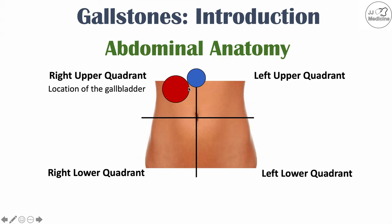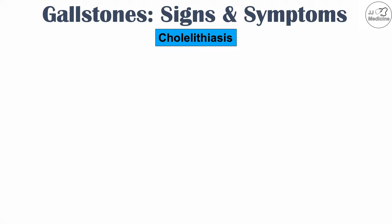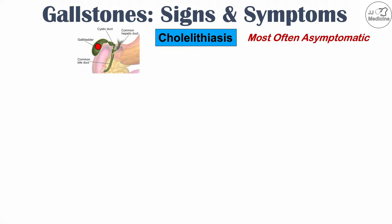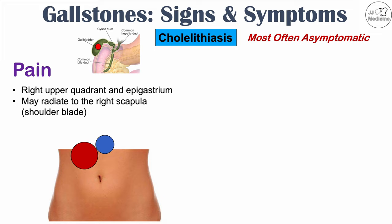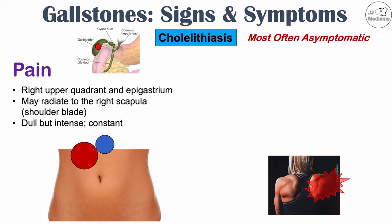So what are the signs and symptoms of cholelithiasis? As mentioned, cholelithiasis is simply having stones in the gallbladder, and most patients are asymptomatic most of the time. One significant symptom that can occur is pain in the right upper quadrant and the epigastrium. Importantly, the pain may radiate to the right scapula — the right shoulder blade — due to nerve innervation from the gallbladder region. This pain is described as dull but intense and constant. The pain of cholelithiasis is called biliary colic — a colicky, sporadic, intermittent pain that occurs after eating fatty and greasy foods.